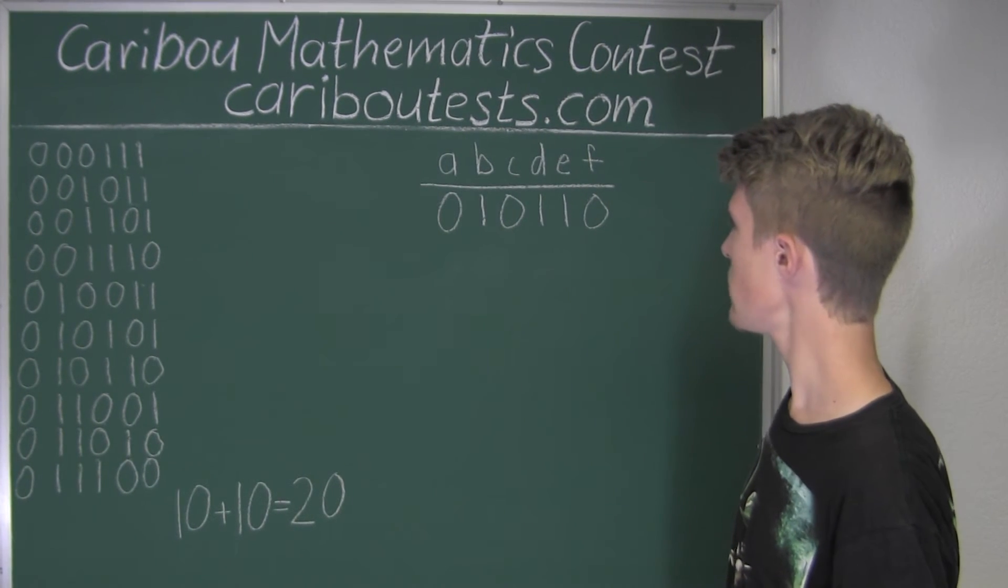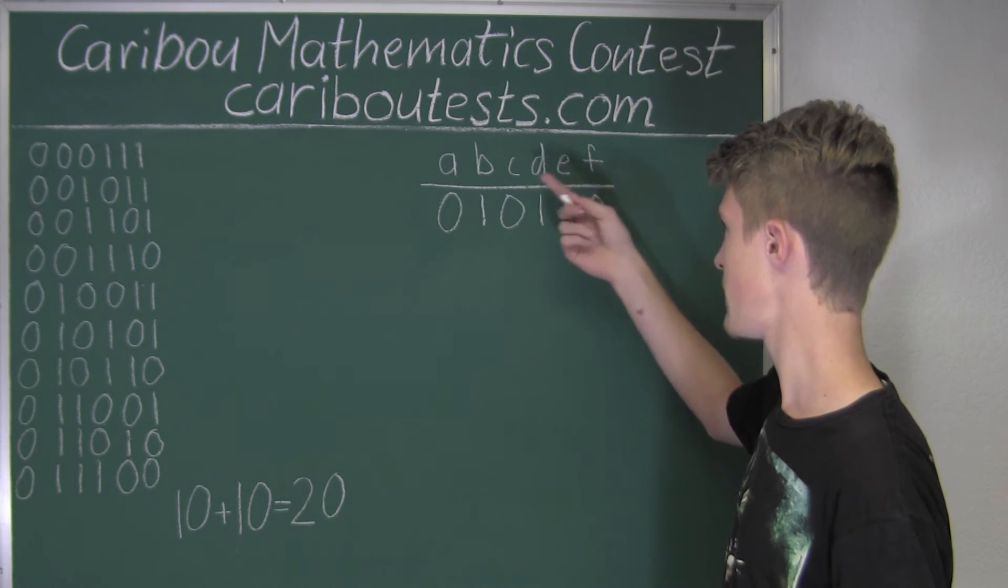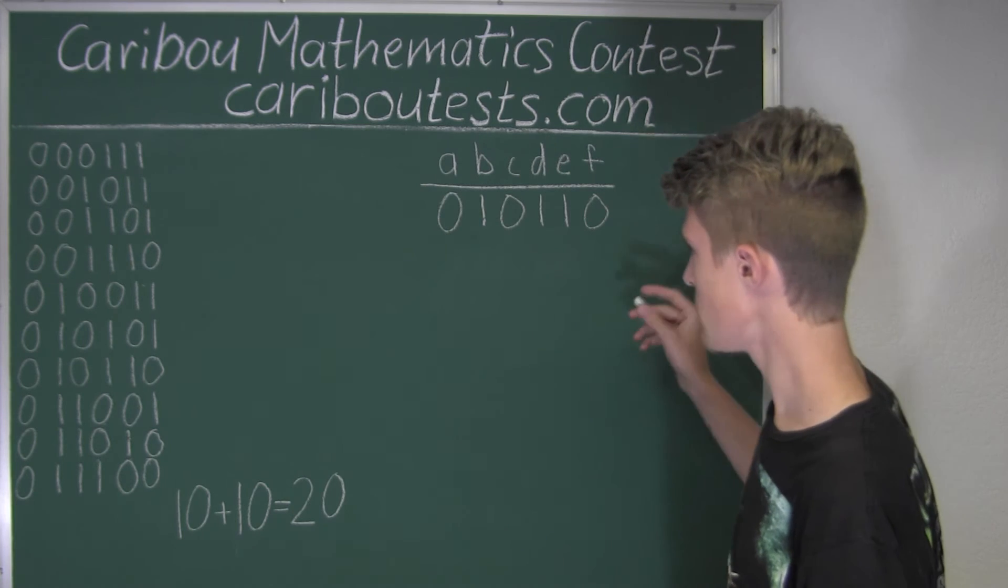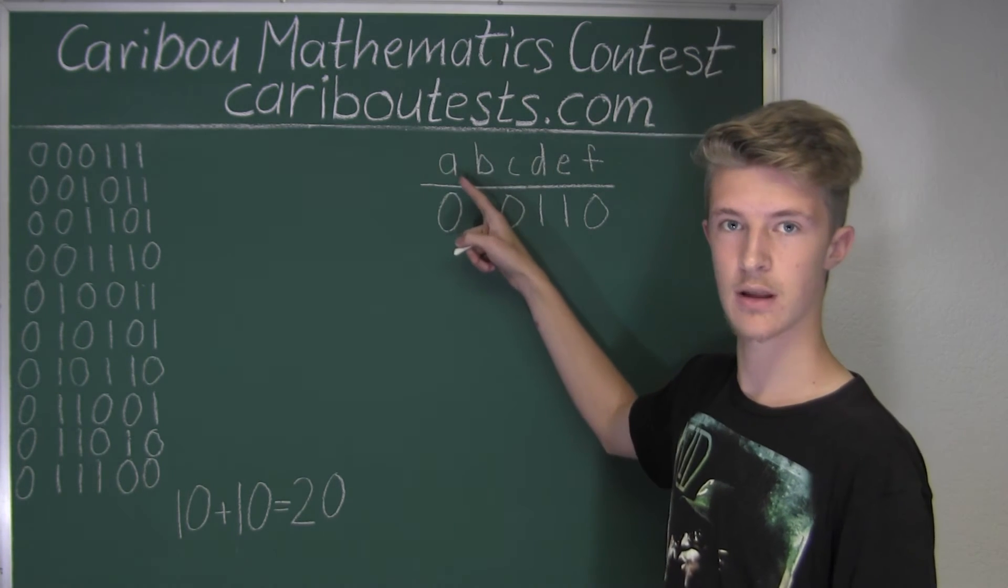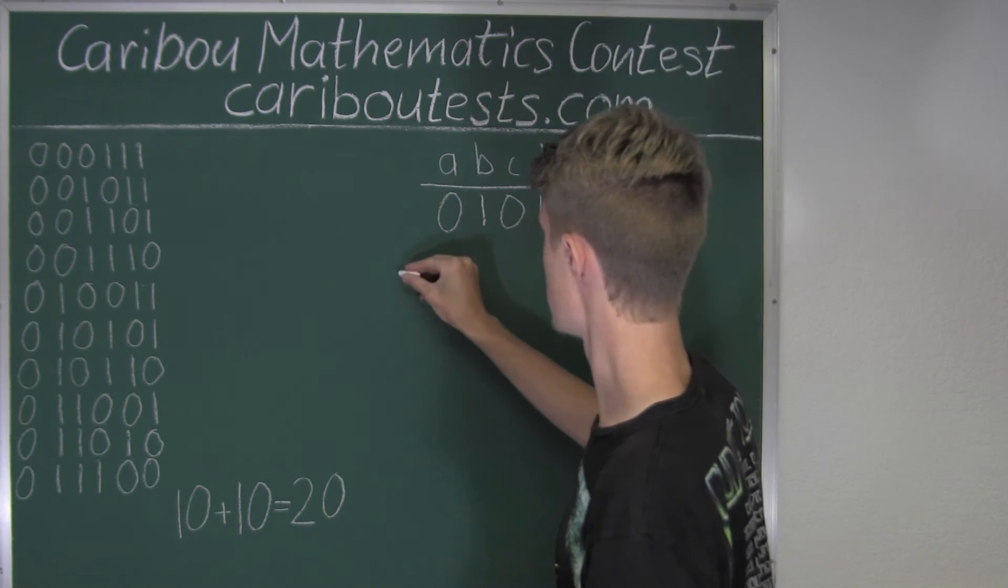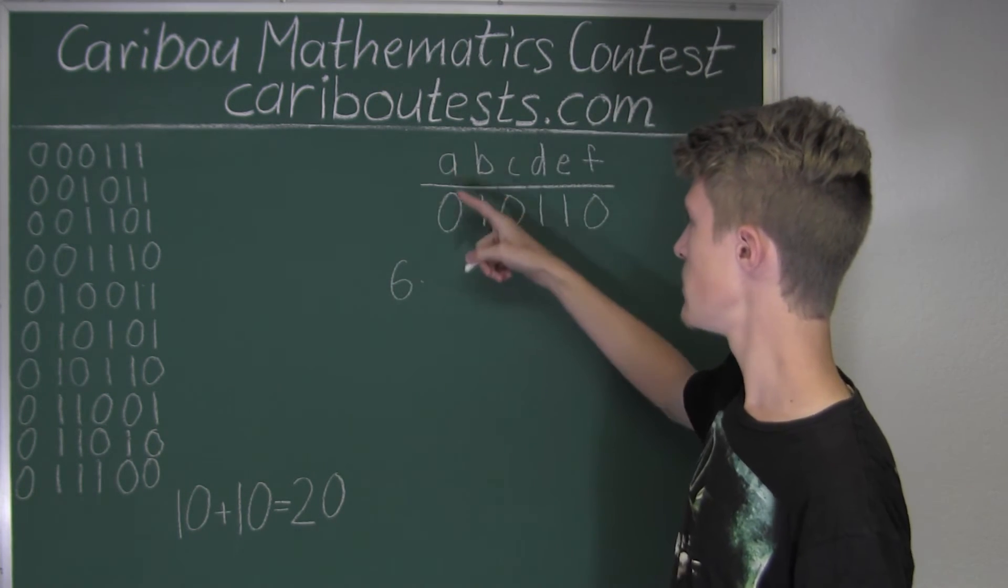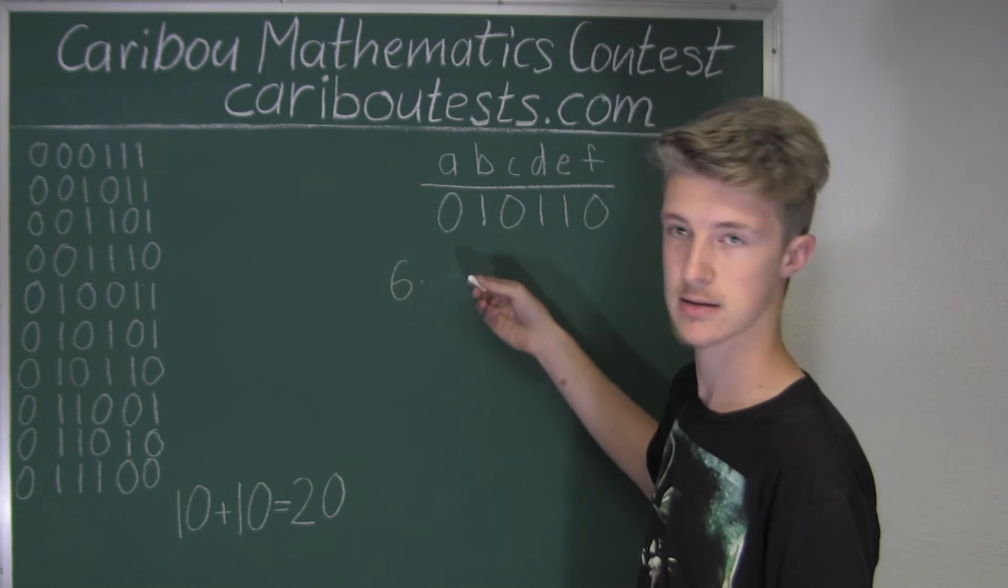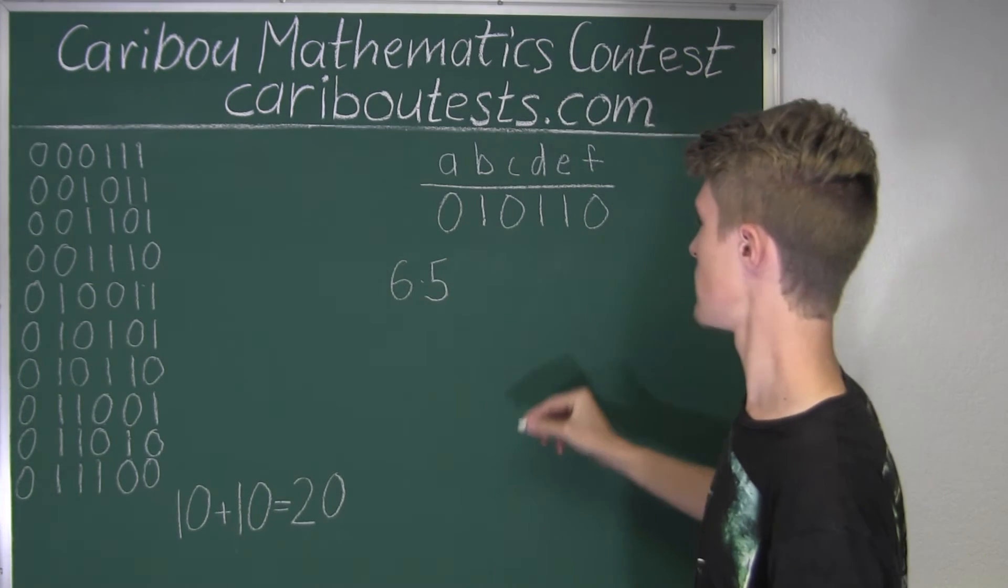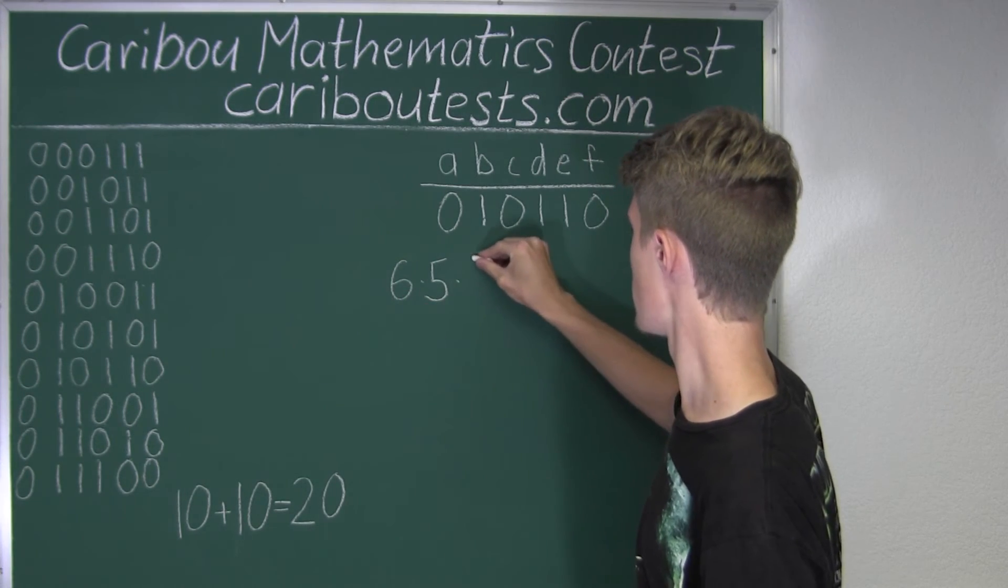All right, so now let's find out how many pickings of, how many different pickings of three letters we would have. All right, so for the first letter, there are six different possibilities. And now for each of those six, we would then have five for the next. And then for each of those six times five, we would then have four for the next.